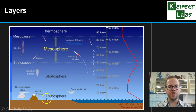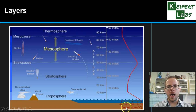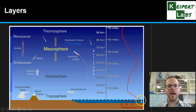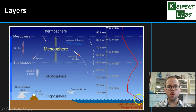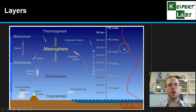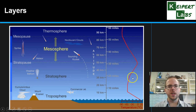You can see the troposphere right down at ground level, moving up to the stratosphere above that, mesosphere beyond that, and then the thermosphere. On the right, there's a red line graph showing the trend in how temperatures change as altitude increases. Starting at relatively warm temperatures, it cools down, then ticks back up, cools down again, and then warms up again.